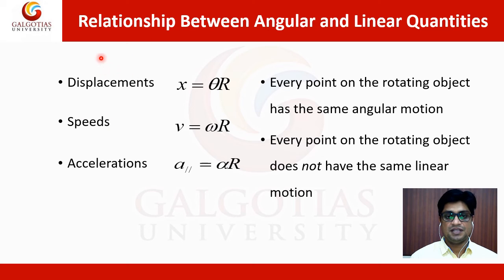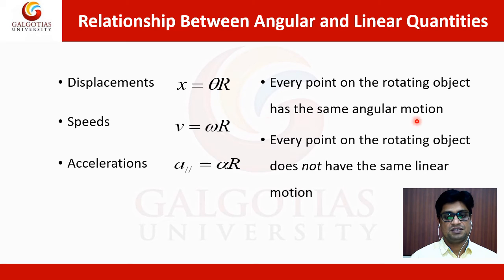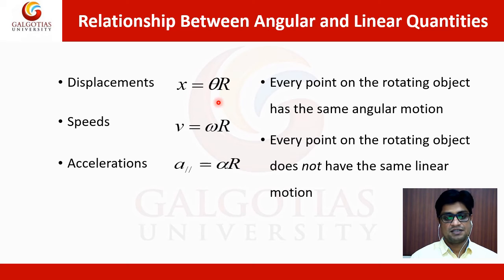Now we come to the relationship between angular and linear quantities. Displacement: x equals theta times r. Speed: v equals omega times r. Acceleration: a equals alpha times r. Every point on the rotating object has the same angular motion, but every point does not have the same linear motion. The important relation is that linear velocity equals angular velocity multiplied by the radius r.